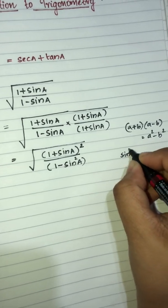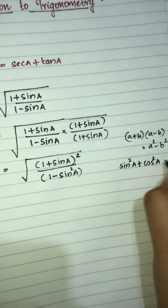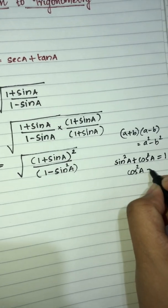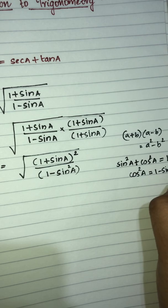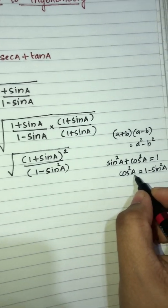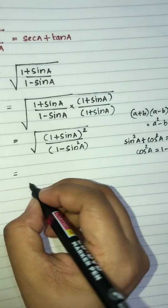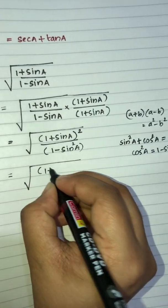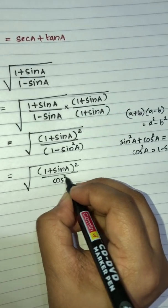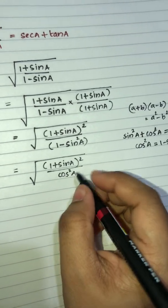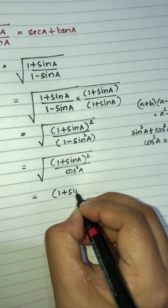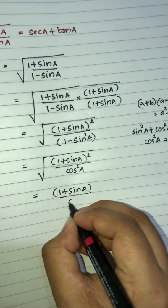Now, sin squared A plus cos squared A is equal to 1. Therefore cos squared A is equal to 1 minus sin squared A, and 1 minus sin squared A equals cos squared A. This gives us (1 plus sin A) whole squared divided by cos squared A. Taking the root cancels the square — numerator becomes (1 plus sin A), denominator becomes cos A.